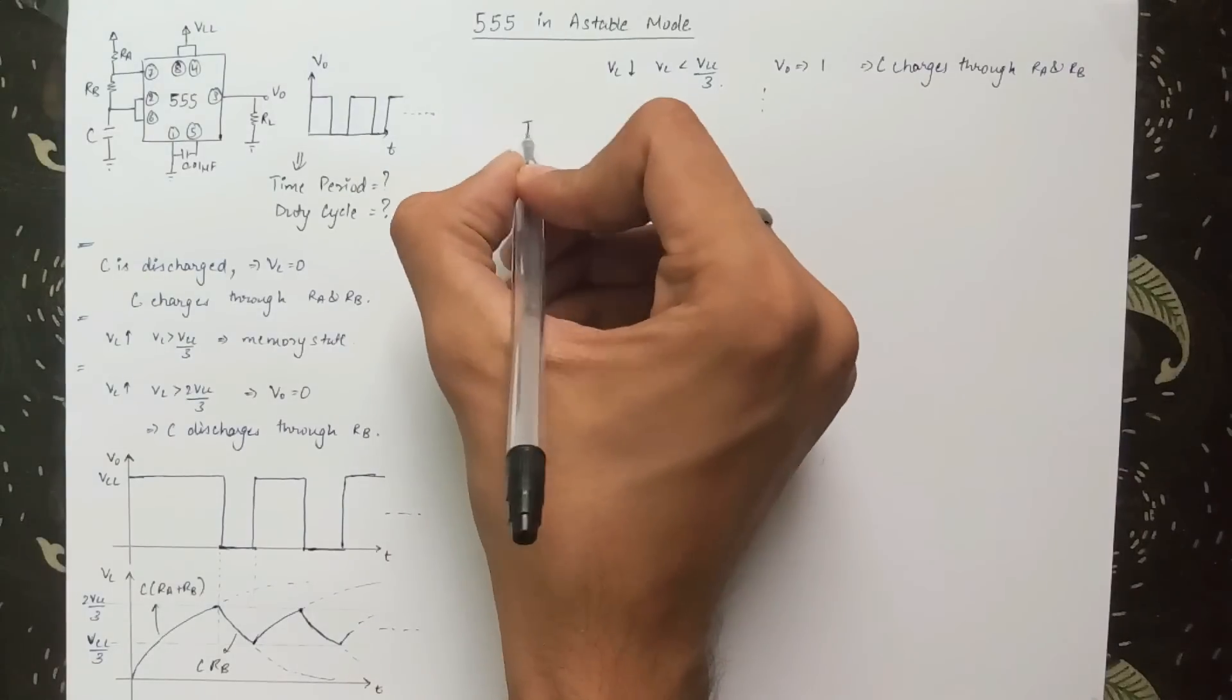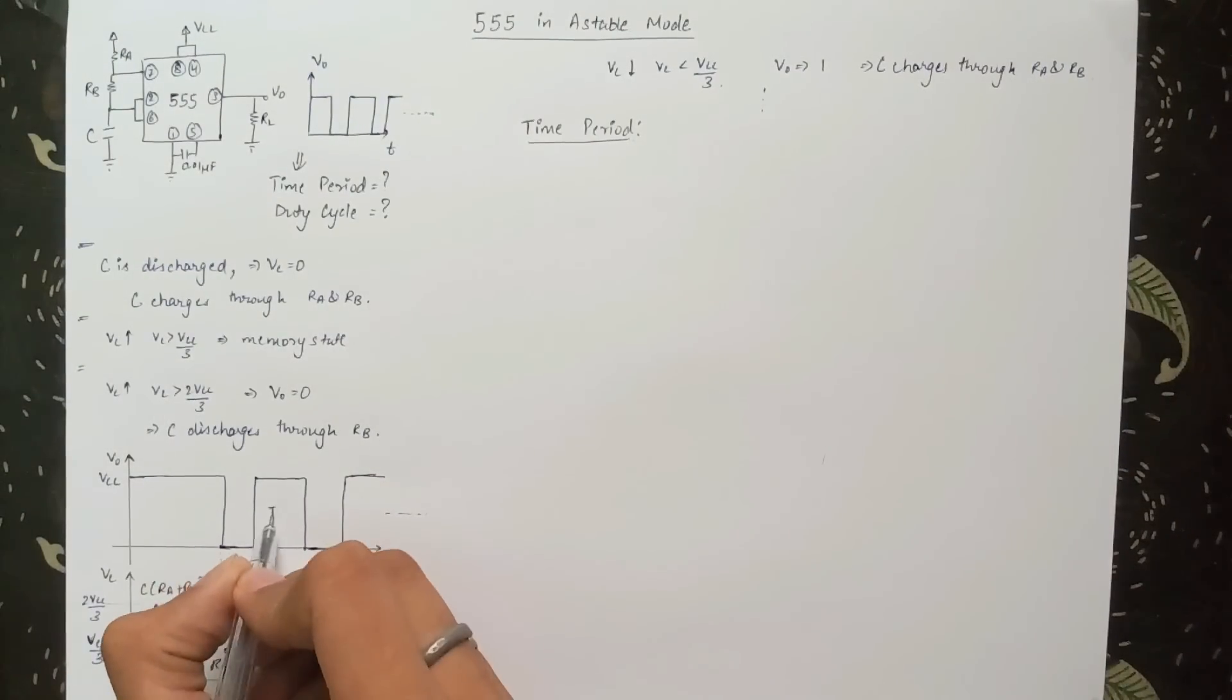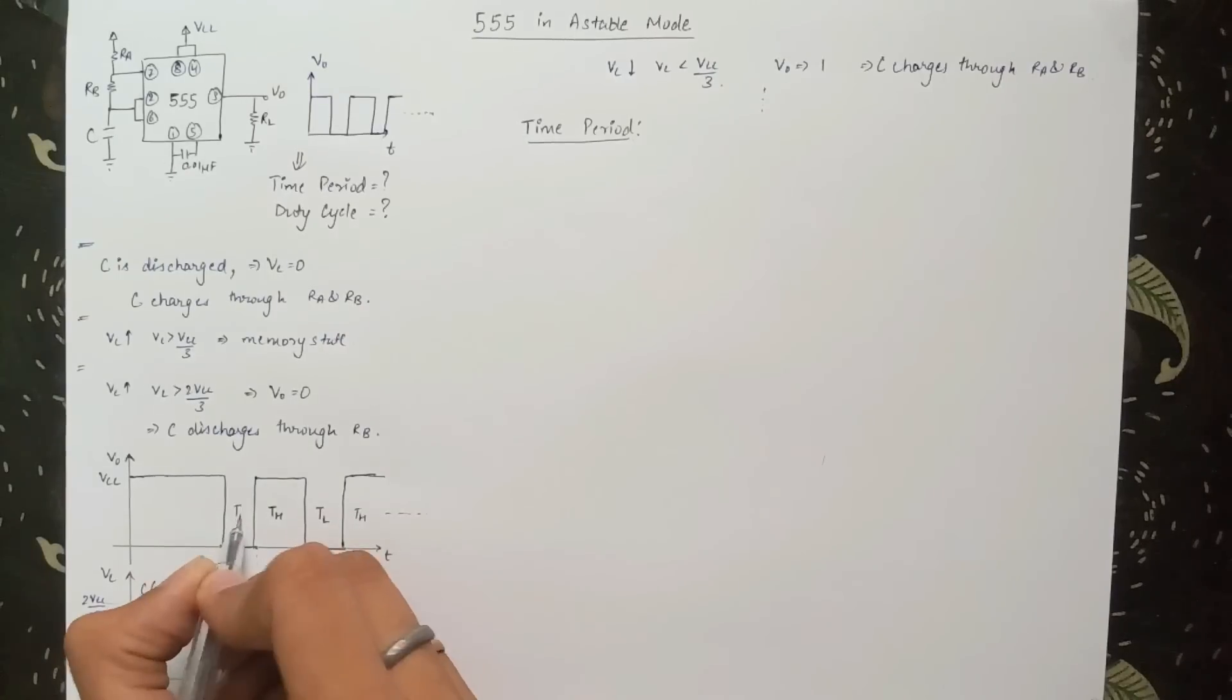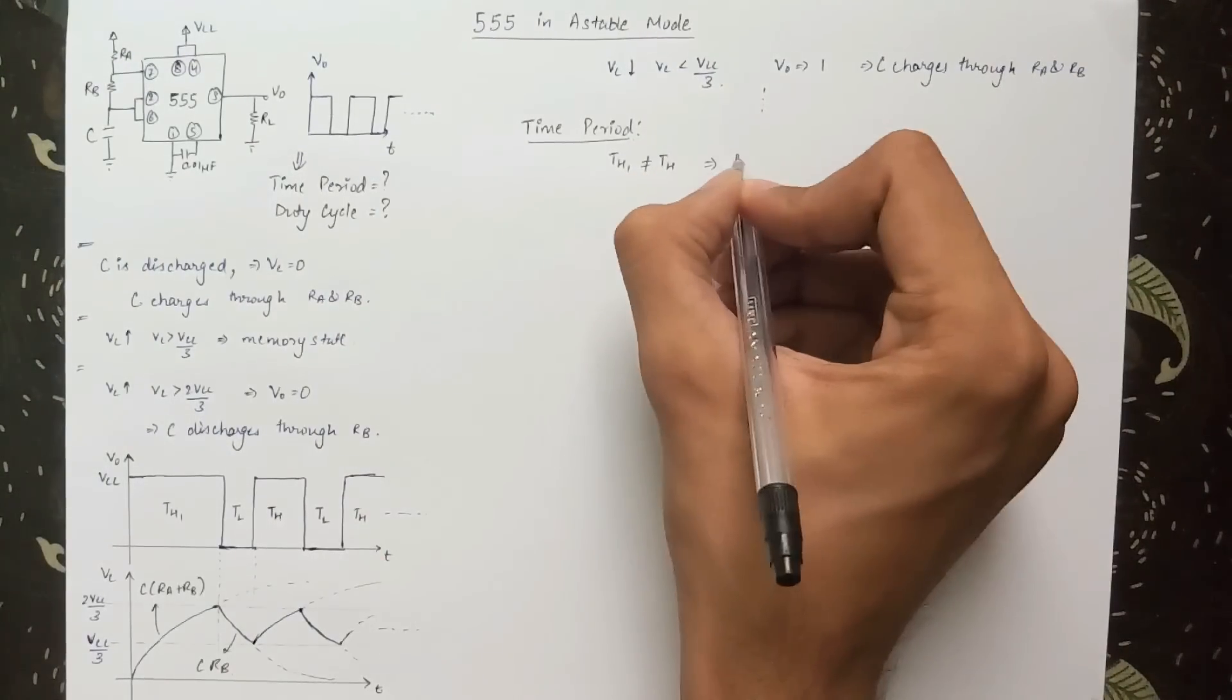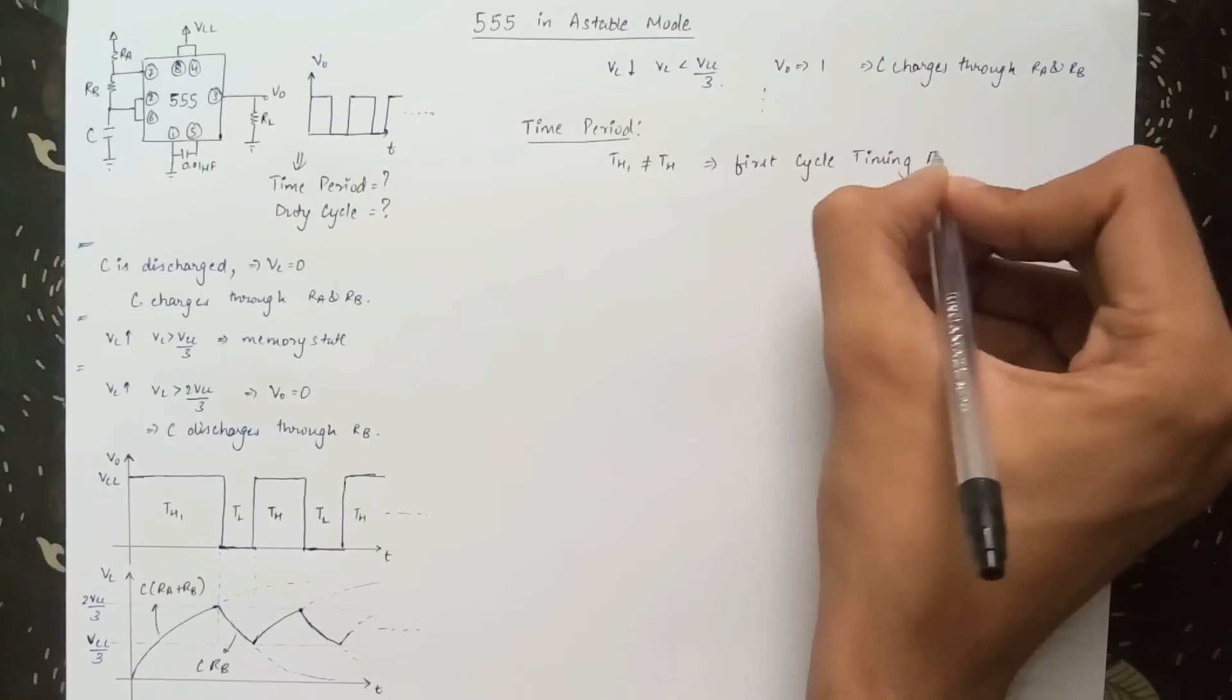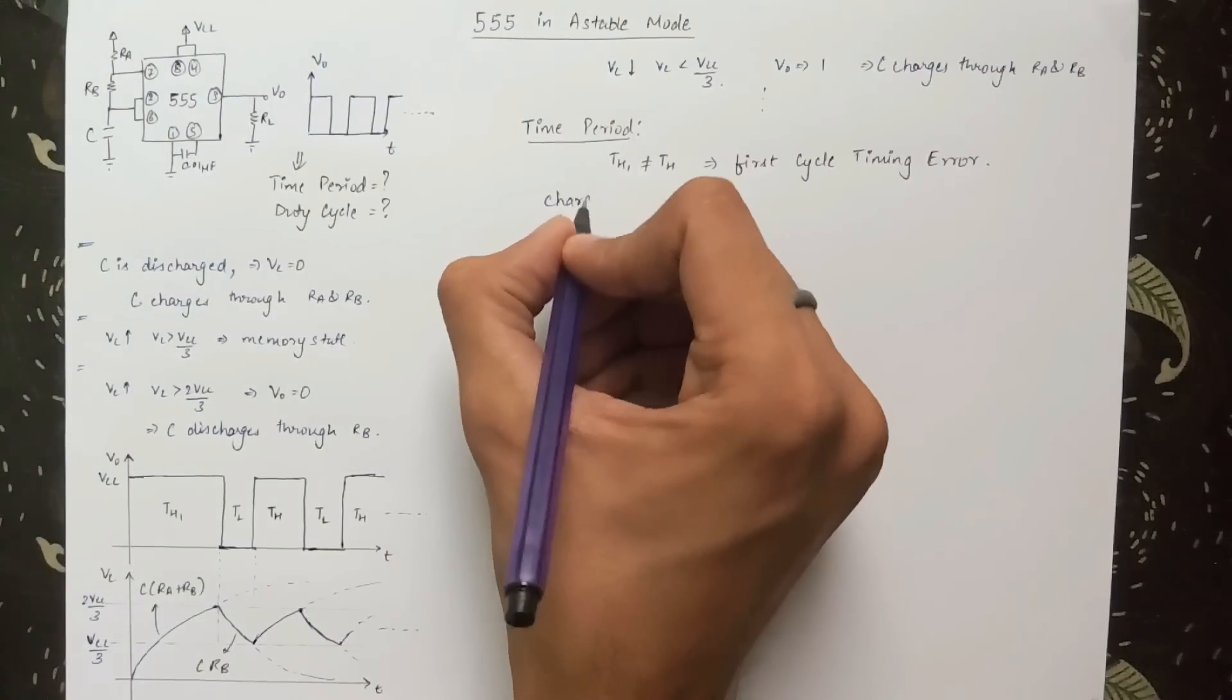Now let's find the time period of our oscillations. Let TH be the charging time and TL be the discharging time. We can see that the first charging cycle is longer than the rest. This is called first cycle timing error, and we will be ignoring it for our analysis.